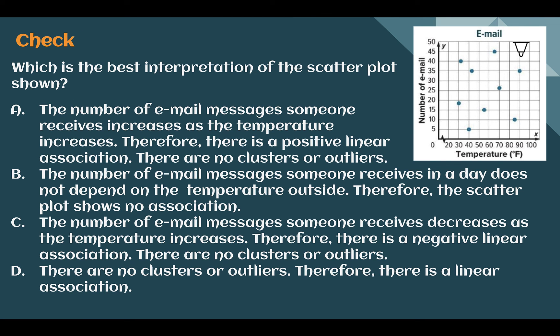Check your understanding: which is the best interpretation of the scatter plot? The answer is B — the number of email messages someone receives in a day does not depend on the temperature outside, therefore it shows no association. There's no pattern visible. Option A says positive linear — there's no association, so that's wrong. Option C says negative — we can't tell, so that's also wrong. Option D says no clusters or outliers, which is true, but it also says there's an obvious linear association, which is not correct. So B is right.